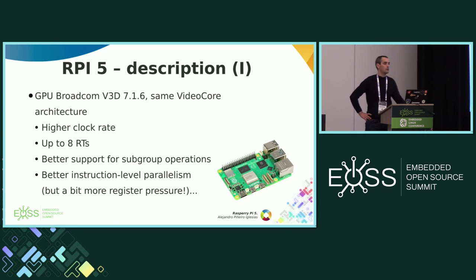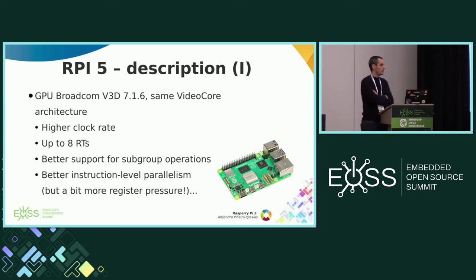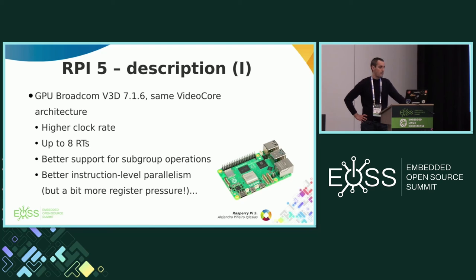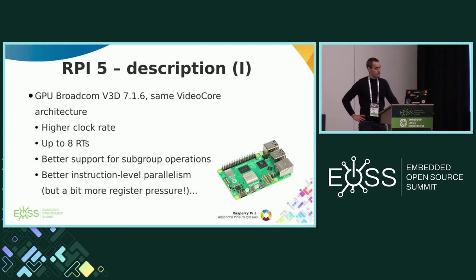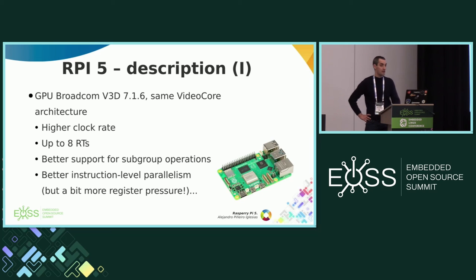Now we have a new toy: the Raspberry Pi 5. As I mentioned, the GPU is Broadcom — it's a new version of the architecture and includes several new features compared with the Raspberry Pi 4. For example, it has a higher core rate, it provides support for more render targets (4 on the RPi 4, now up to 8), it includes better support for subgroup operations, better instruction-level parallelism, and more room for performance improvement. There is also a little more register pressure, so we need to do some work to improve the register allocation.